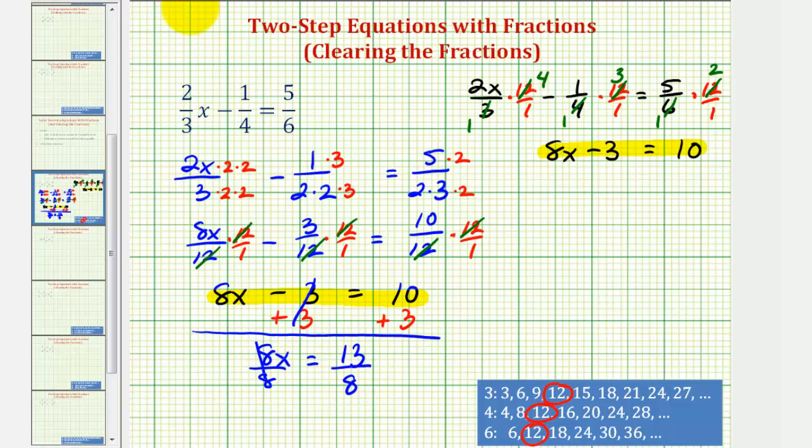So we have our solution. Our solution is x equals thirteen eighths. This is an improper fraction. Even though it is simplified, let's go and also express this as a mixed number. To do this, we'll perform this division. Remember, a fraction bar means division. So thirteen divided by eight.